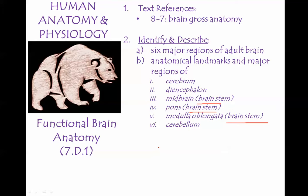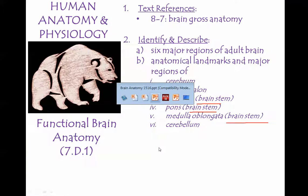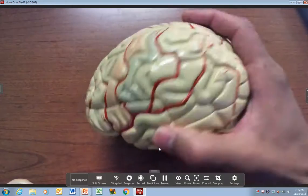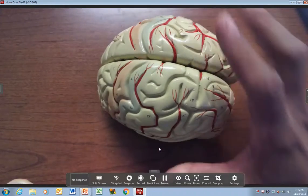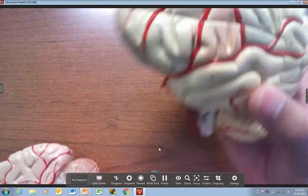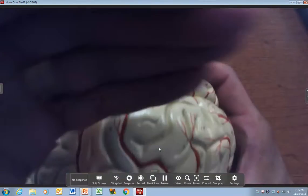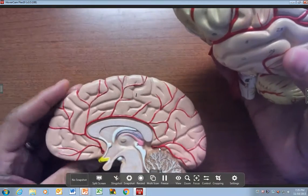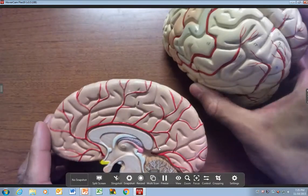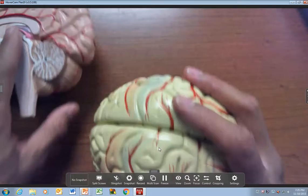So we're going to walk through this. I'm going to go back and forth from looking at a brain model. I've got two brain models. I have an intact one. And I also have a mid-sagittal cut, so that we can see the medial view. And we're going to walk through and talk about a bunch of this.